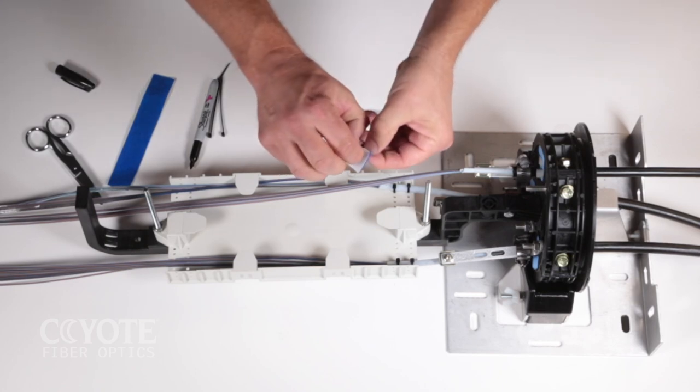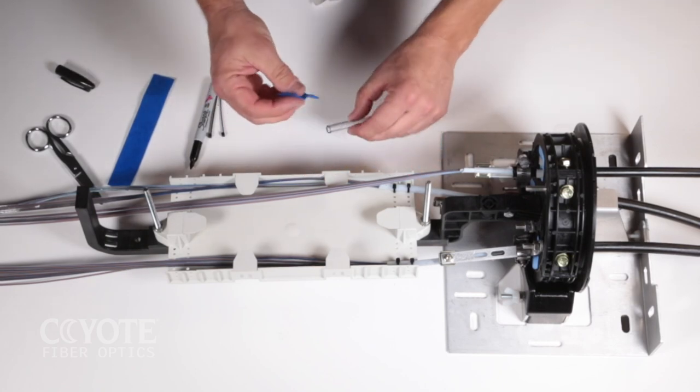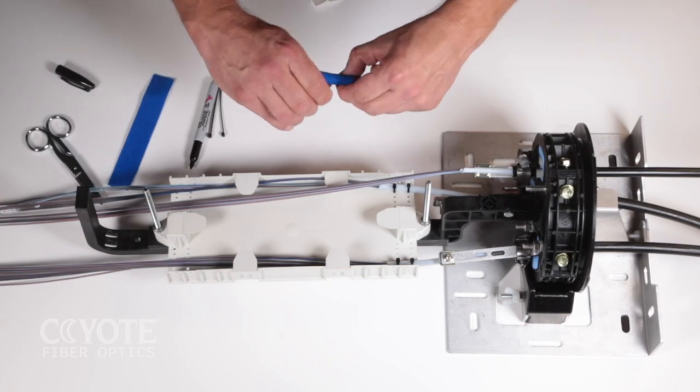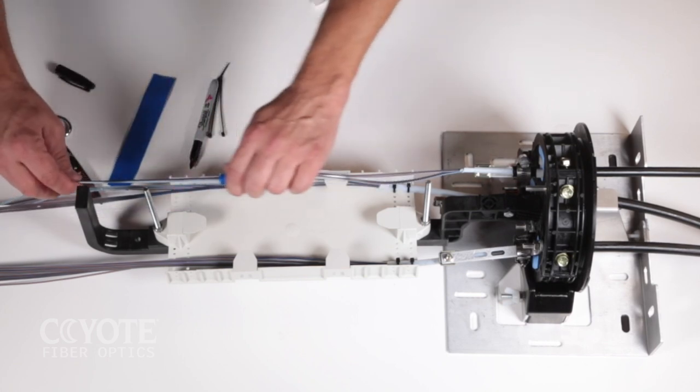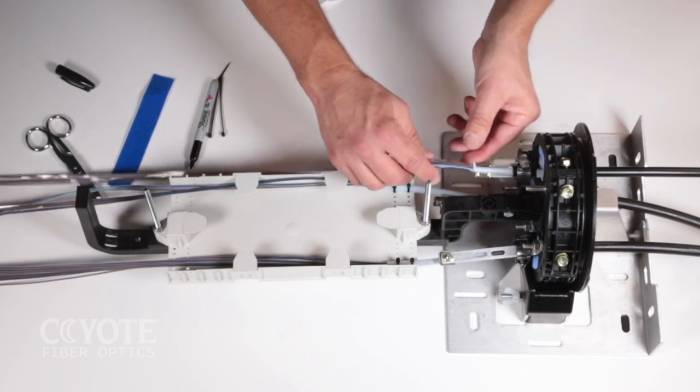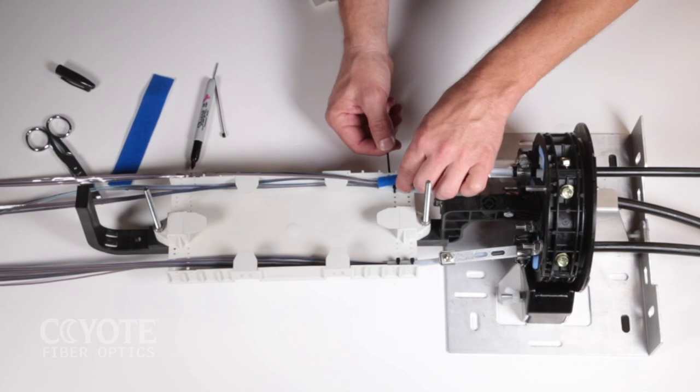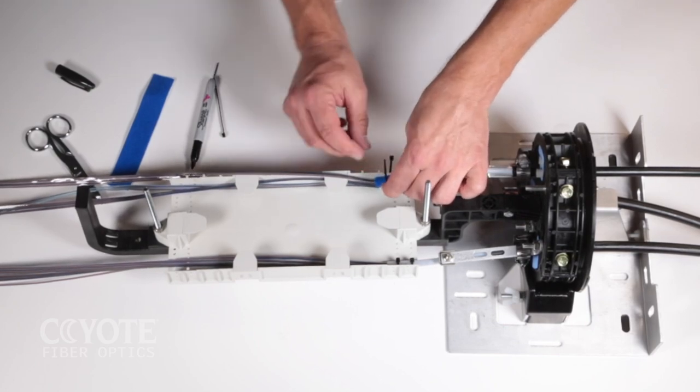Apply blue felt tape around the end of the transition tube that you will be securing to the transition compartment. Slide a transition tube over the branch cable's core tube to route ribbons from the upper cable port. Secure the transition tube to the transition compartment.